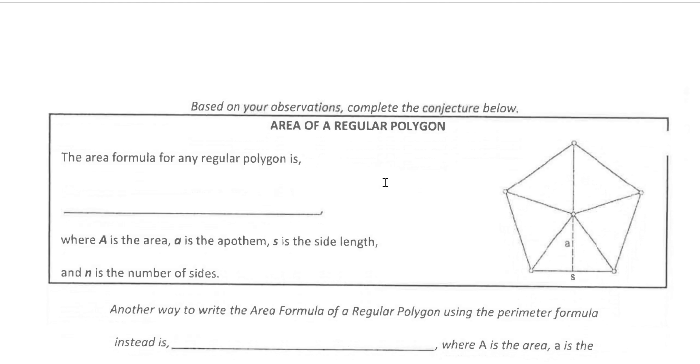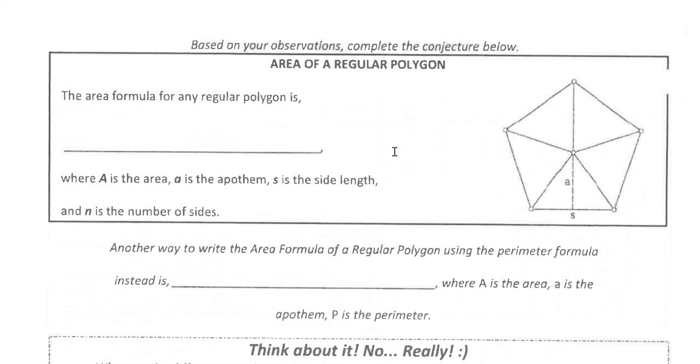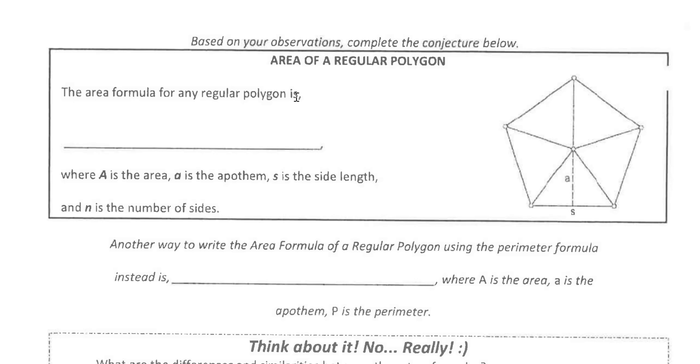So based on what we've just done, the area formula for a regular polygon is A times S times N, ASN divided by 2. So A is the area, lowercase a is the Apothem, S is the side length, and N is the number of sides. So you have to keep track of what all these variables stand for.